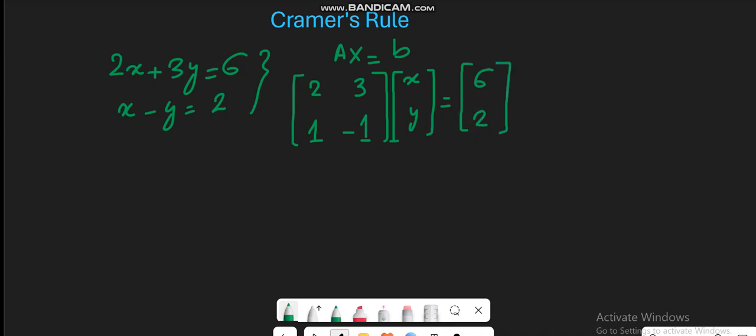Once you have written in this format, the next step is to find the determinant of A. So the determinant of A is denoted by the straight line bars, and it's equal to 2, 3, 1, minus 1. Let's just simplify it.